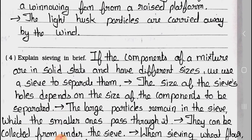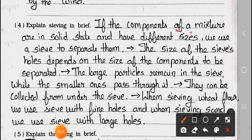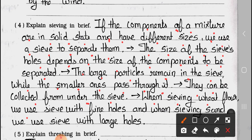Question 4: Explain sieving in brief. Answer: If the components of a mixture are in solid state and have different sizes, we use a sieve to separate them. The size of the sieve's holes depends on the size of the components to be separated. The large particles remain in the sieve while the smaller ones pass through it and can be collected from under the sieve. When sieving wheat flour we use a sieve with fine holes, and when sieving sand we use a sieve with large holes.